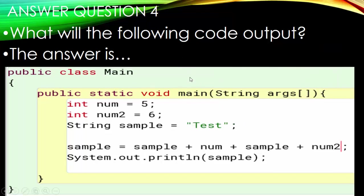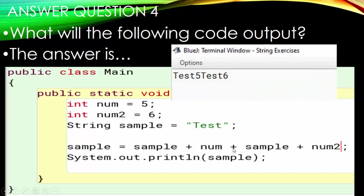Number four: we have 'Test' at the beginning, then num, then sample again, then num2 — effectively 'Test' plus 5 plus 'Test' plus 6. We're concatenating integers with strings but no integers are side by side. The output is 'Test5Test6' — no addition this time because we don't have integers side by side.